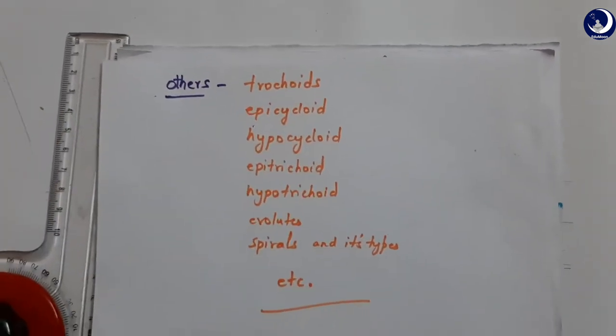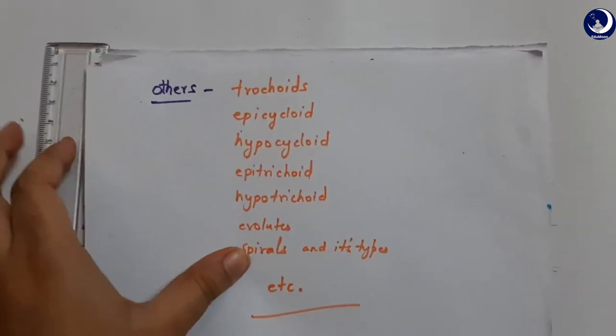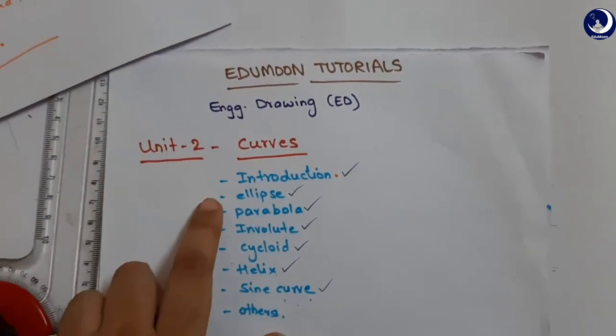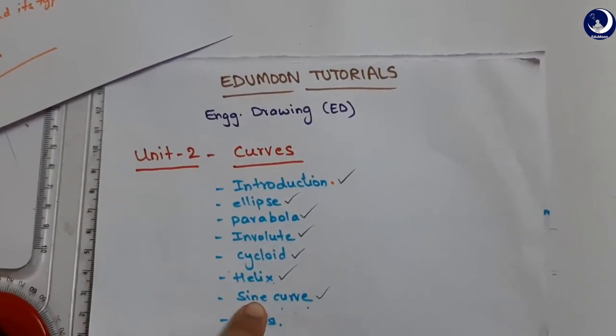So there are many. I discussed the main ones. That is these: I discussed ellipse, parabola, involutes, cycloid, helix, and sine curve.